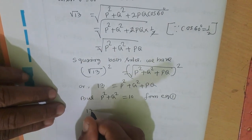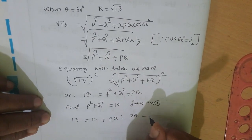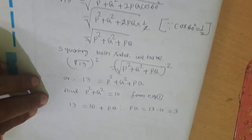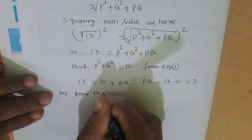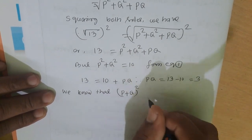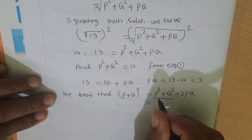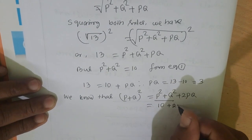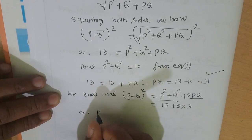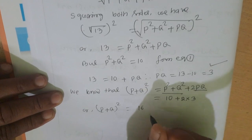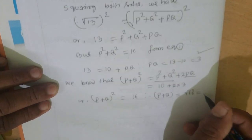But P² + Q² = 10 from equation 1. Therefore, we can write 13 = 10 + PQ. Therefore PQ = 13 − 10 = 3. We know that (P + Q)² = P² + Q² + 2PQ = 10 + 2×3 = 16. Therefore P + Q = √16 = 4.